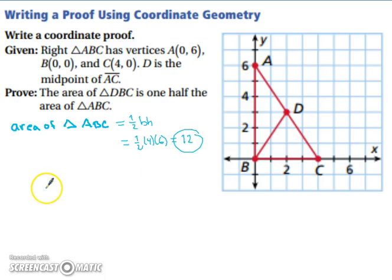Now we need to figure out the area of our other triangle, but we need to know what this point is. So we can use our midpoint formula. Using the midpoint formula, we have the fact that D is at the coordinate 2, 3.